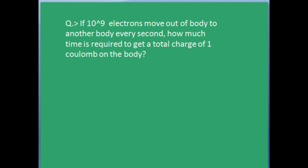Let's solve a small problem. If 10^9 electrons move out of a body to another body every second, how much time is required to get a total charge of 1 coulomb on the body? Note that since electrons move out, the charge remaining is positive. If 10^9 electrons move out in a second, the positive charge accumulated in a second is the basic unit of charge e times 10^9.